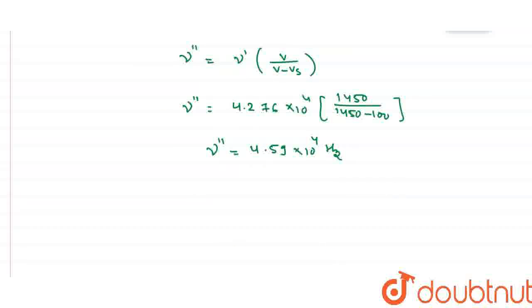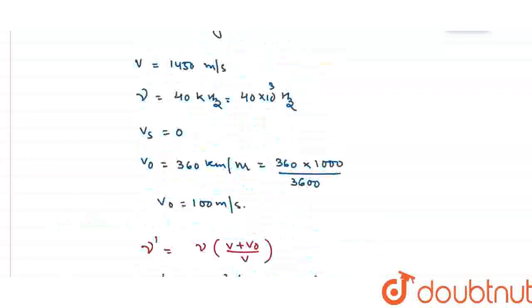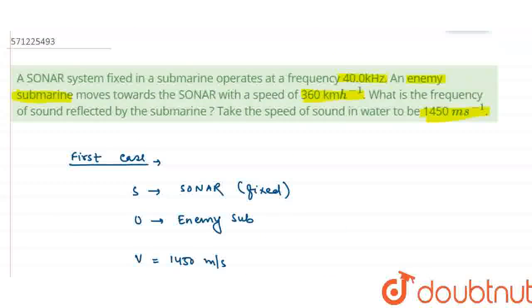I can also write this as nu double dash equals 45.9 kilo hertz. This is the frequency of sound reflected by the enemy submarine. Thank you.